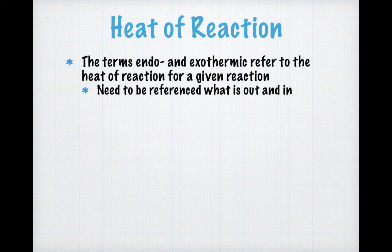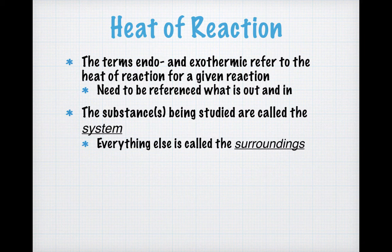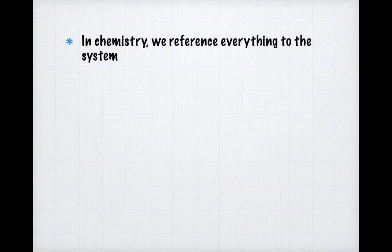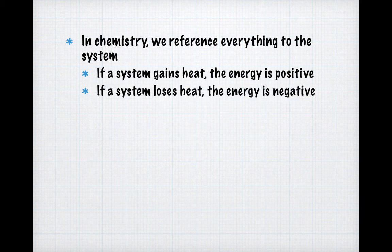Everything in thermodynamics is referenced around the system. The substances being studied are called the system, and everything else is called the surroundings — only the atoms and molecules involved in a reaction are the system. In chemistry, we reference everything to the system. If the system gains heat, the energy is positive — this is endothermic. If the system is giving off or losing heat, the energy is negative — this is exothermic.